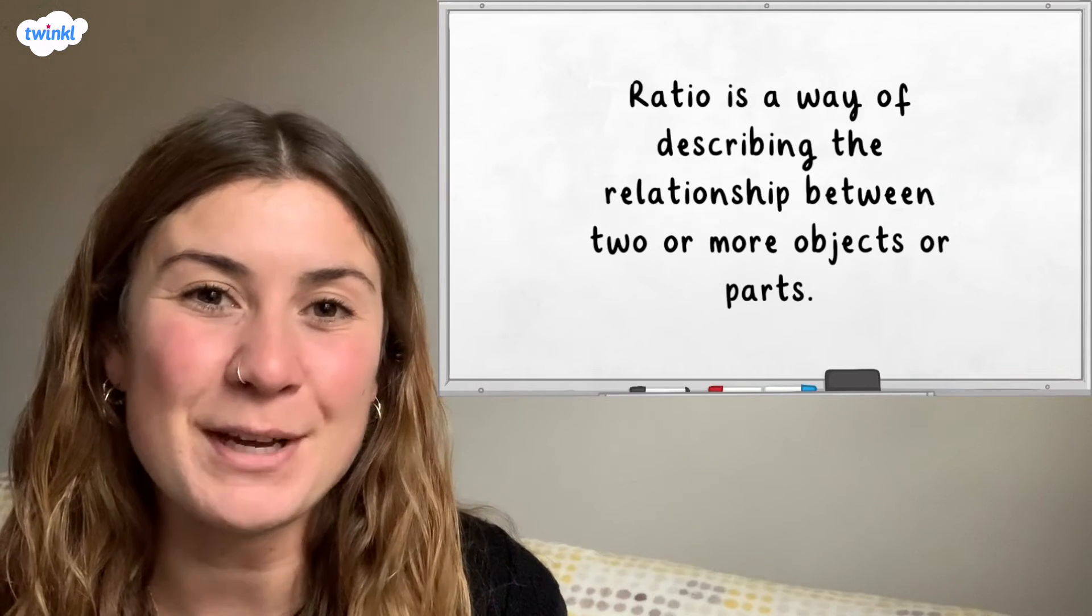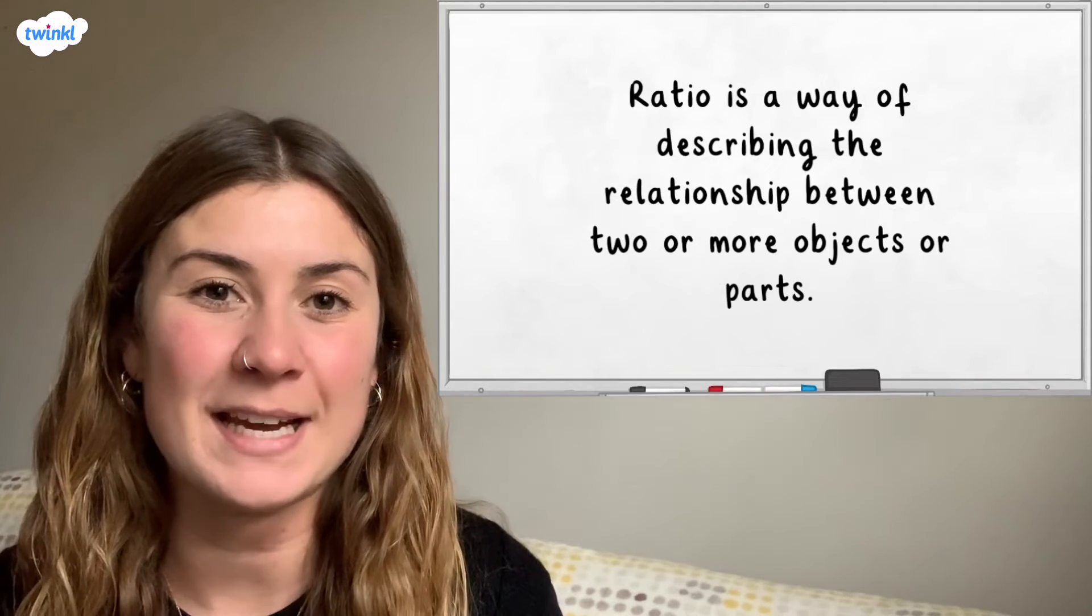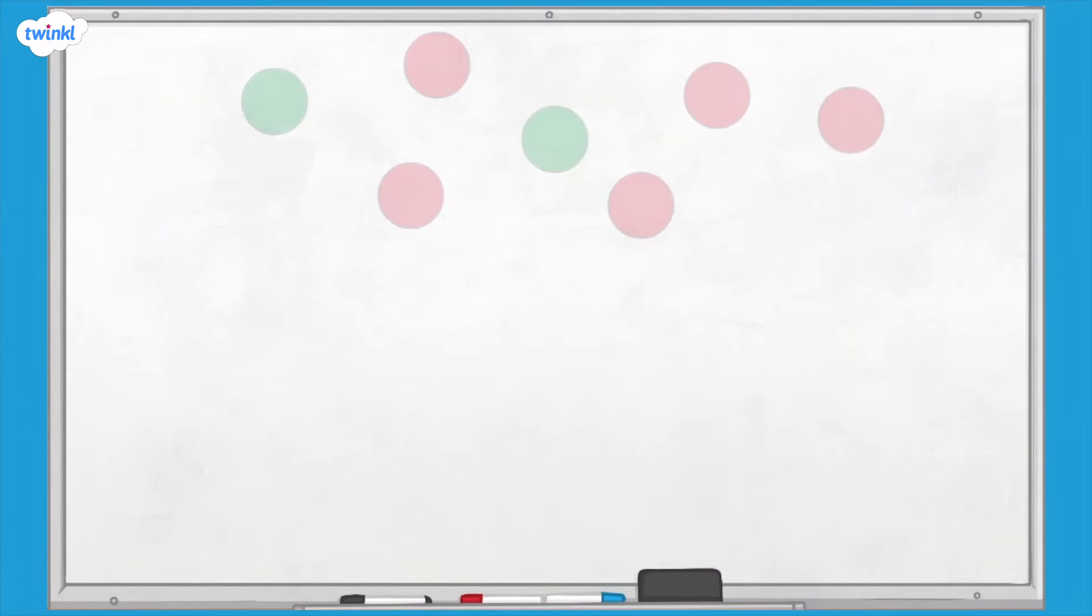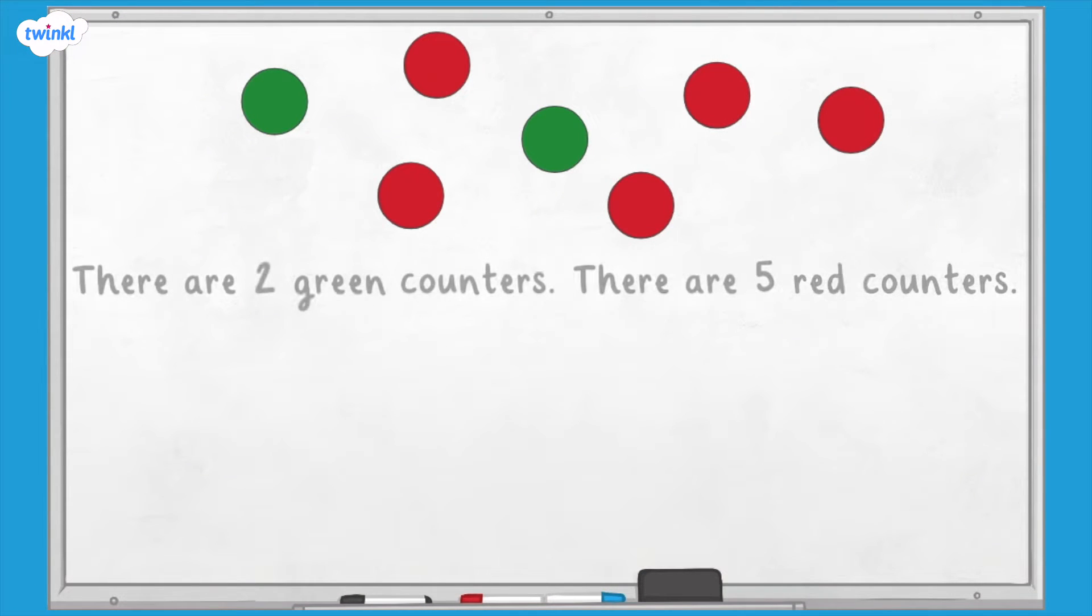If you haven't already, it might be a good idea to watch our video explaining the language of ratio first. Here we have some counters. There are two green counters and five red counters.